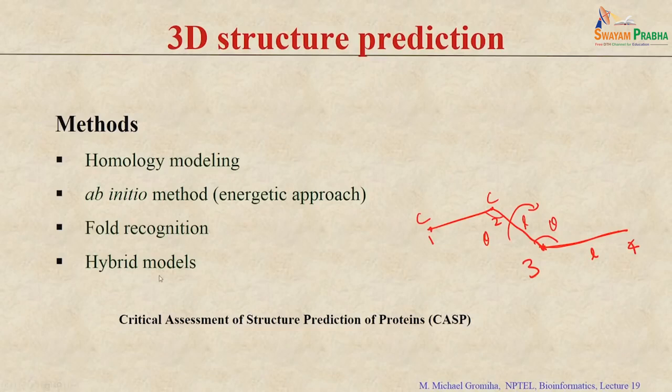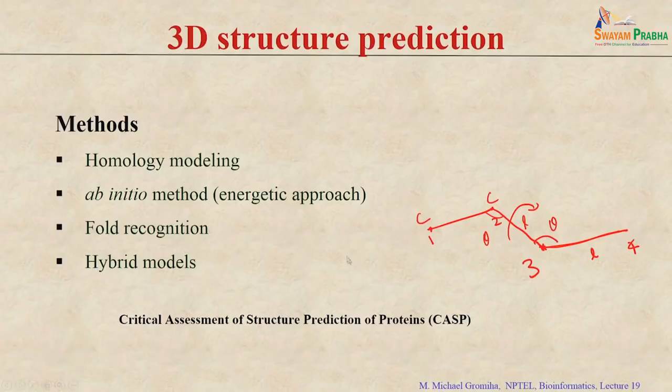Recently there are several hybrid methods that combine different techniques. Wherever we have significant similarity, we use homology modeling; where sequence identity is less, we apply ab initio modeling; and finally we combine everything together using energy minimization to build a single structure. The ability of these techniques can be assessed using a competition called CASP — Critical Assessment of Protein Structure Prediction — which is conducted once every two years, allowing researchers to compare the accuracy of their methods.